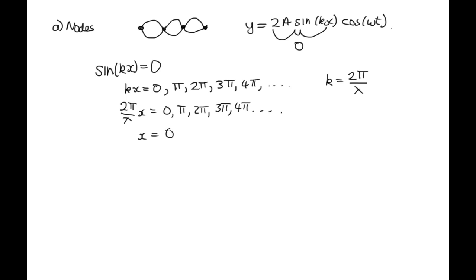And we end up with x is equal to zero. And then we've got π times λ over 2π. And then we've got 2π times λ over 2π. And then we've got 3π times λ over 2π, 4π times λ over 2π.